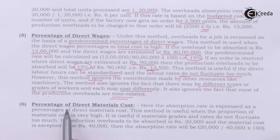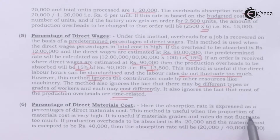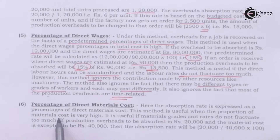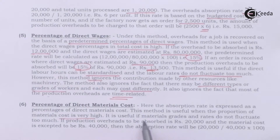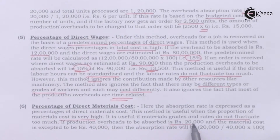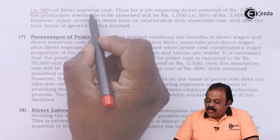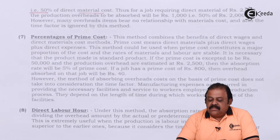Percentage of direct material cost method: the absorption rate is expressed as a percentage of direct material cost. This method is useful when the proportion of material cost is very high and material grades and rates do not fluctuate too much. If production overheads to be absorbed are Rs. 20,000 and material cost is expected to be Rs. 40,000, then the absorption rate will be 50% of direct material cost.